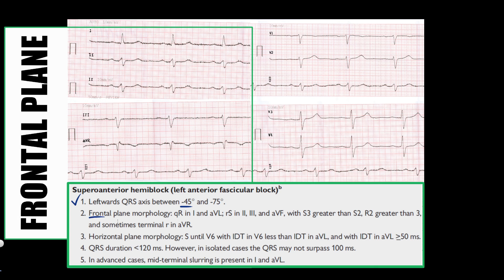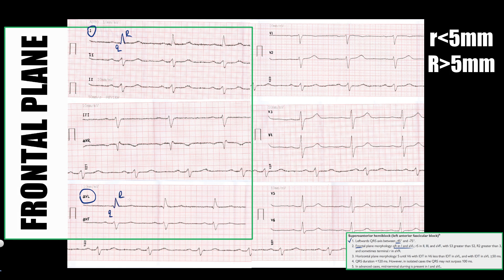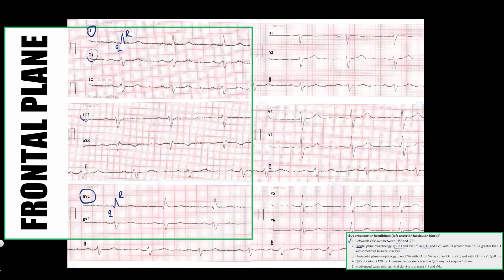Now let's check the frontal plane QRS morphology. In left anterior fascicular block, QRS changes mostly occur in the frontal plane because ventricular activation changes mostly in the frontal plane. In the first standard lead and AVL, the QRS has qR morphology with a small Q-wave and large R-wave. Note that a wave with amplitude less than 5 mm is named with a lowercase letter, and greater than 5 mm with an uppercase letter. In the inferior leads — second, third, and AVF — the QRS has rS morphology with a small R-wave and large S-wave.